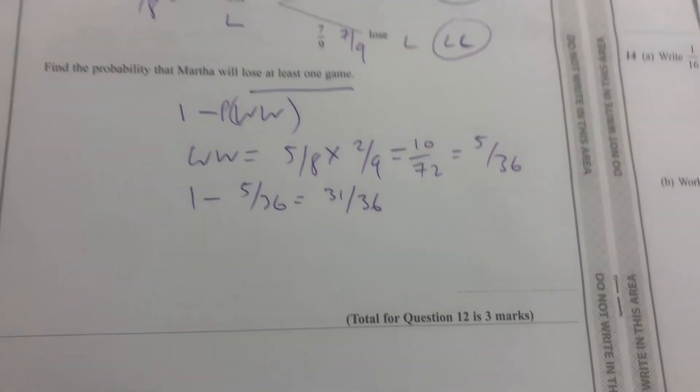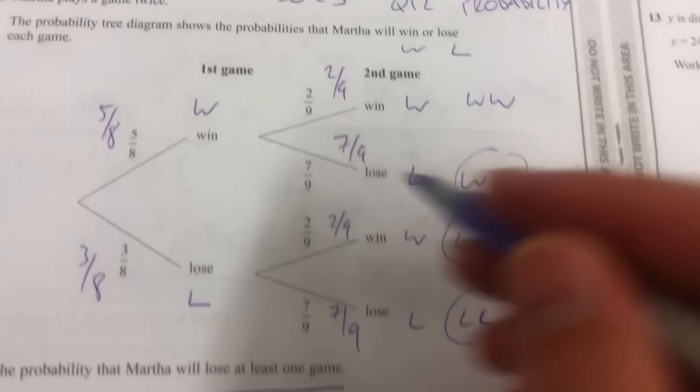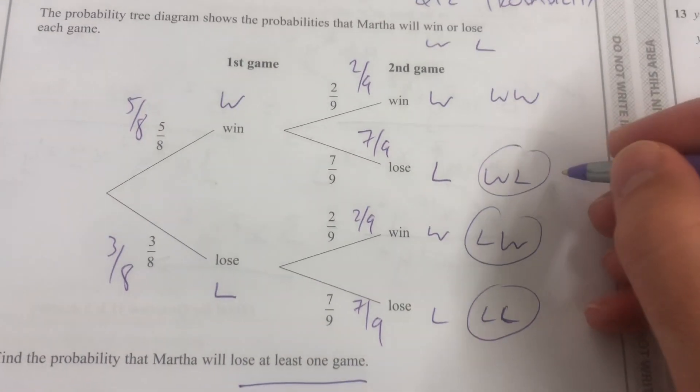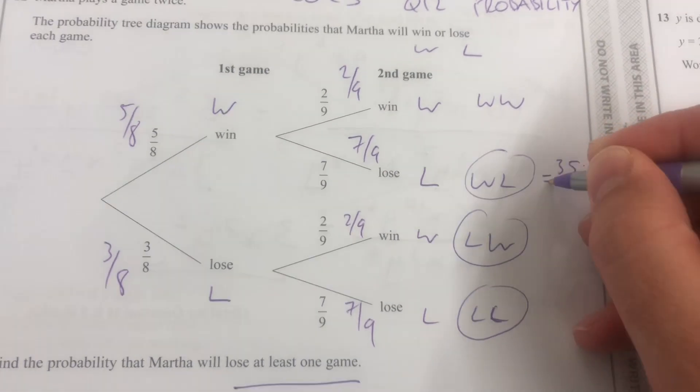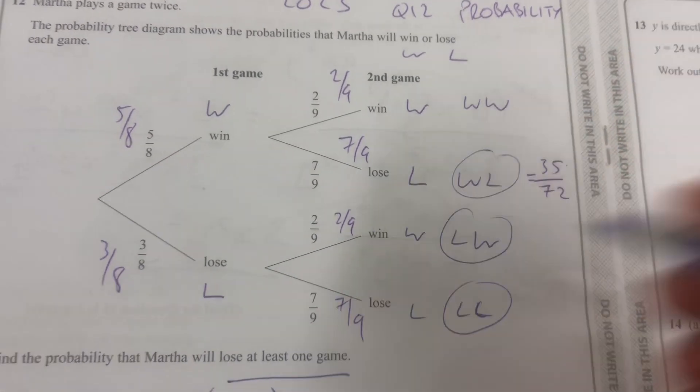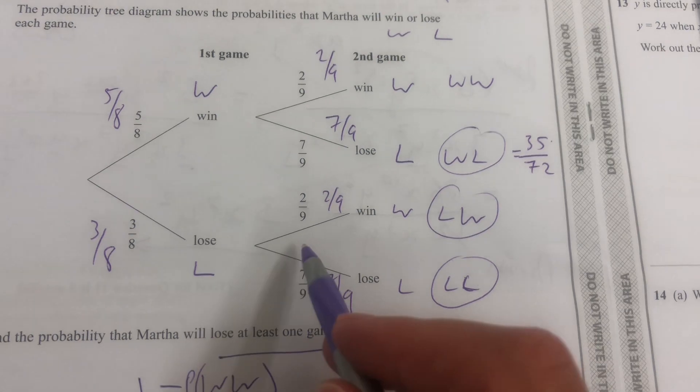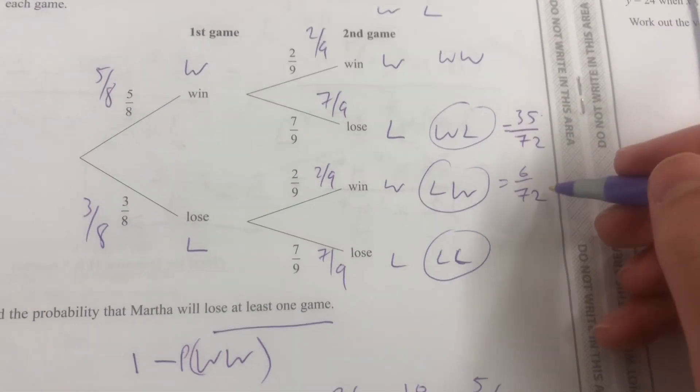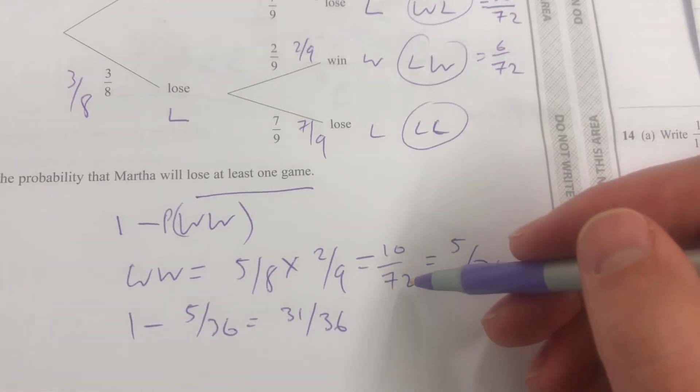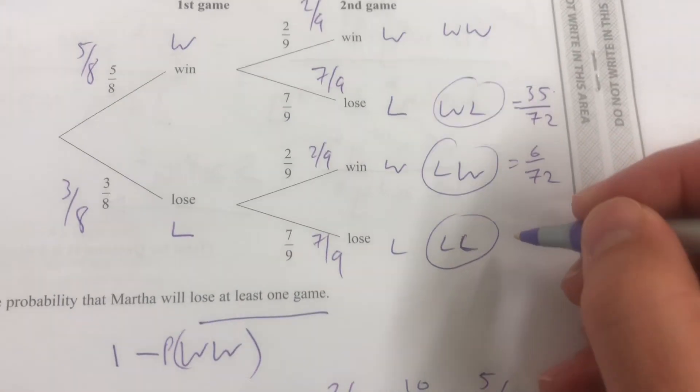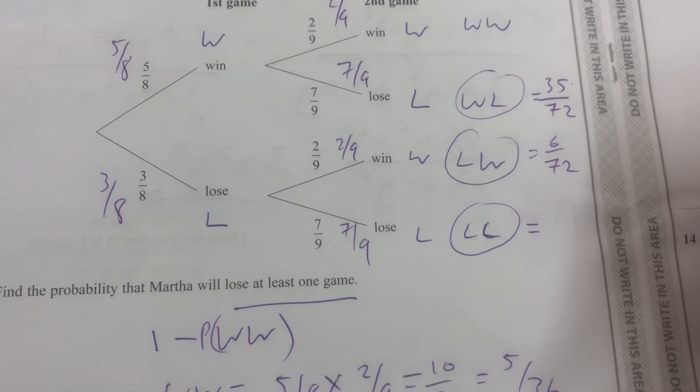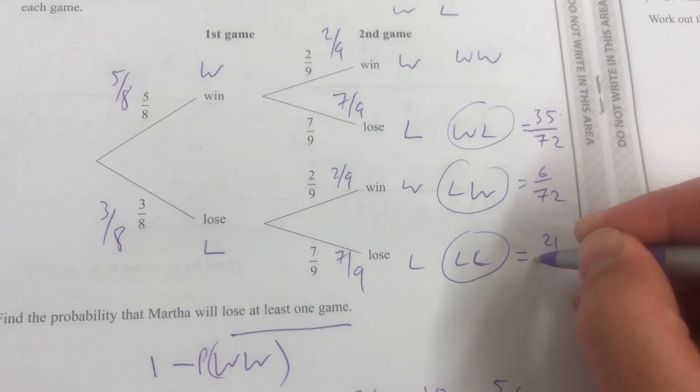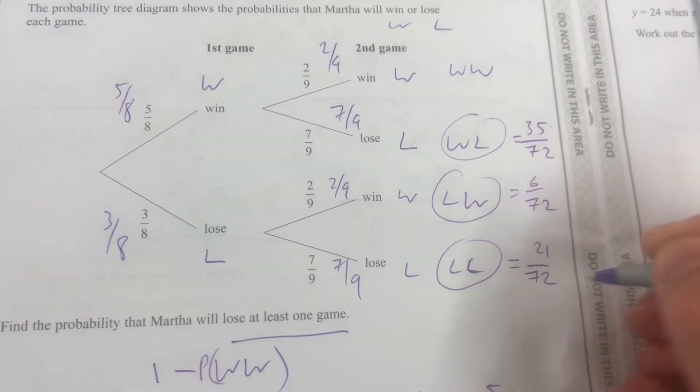But let's just confirm that it's right. I'm going to work out the others. So five-eighths times seven-ninths is 35 over 72. Three-eighths times two-ninths is six over 72, and I'm leaving it all over 72 or 36 just so I can compare it. And then here, this is three-eighths times seven-ninths, and that's going to be 21 over 72.